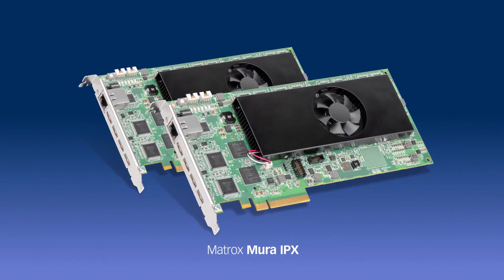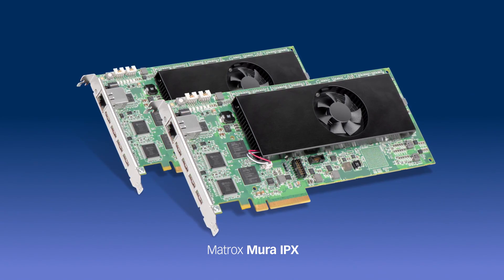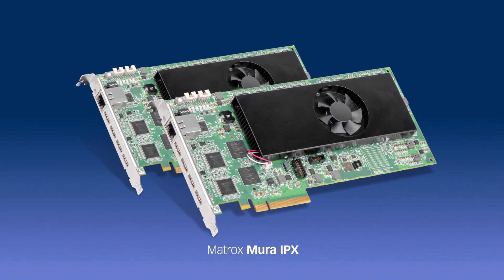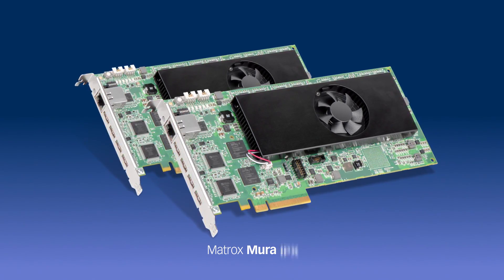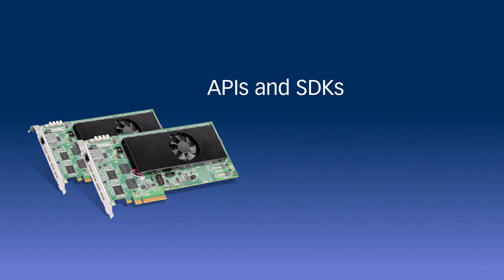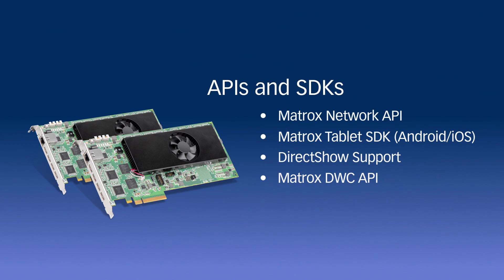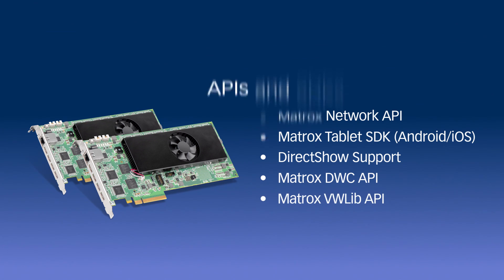Alternative software control options can be created using Mura Control-developed APIs and software development kits. These developer-level options protect past investments in Matrox technology via backward compatibility, and future investments through long product life cycles.